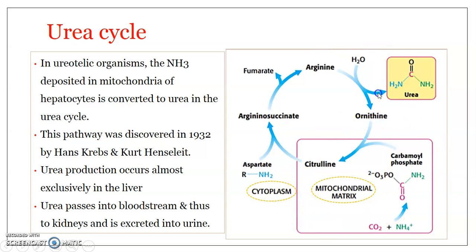The urea cycle was discovered in 1932 by Hans Krebs and Kurt Henseleit, and hence this cycle is also referred to as the Krebs-Henseleit cycle. Urea is one of the end products of protein and amino acid metabolism. The nitrogen of amino acids gets converted to ammonia, which then enters the urea cycle and gets converted to urea, which is expelled in ureotelic animals. Urea production occurs almost exclusively in the liver.